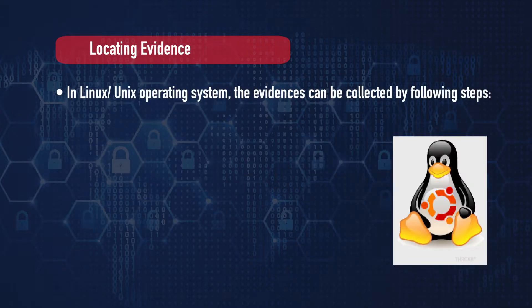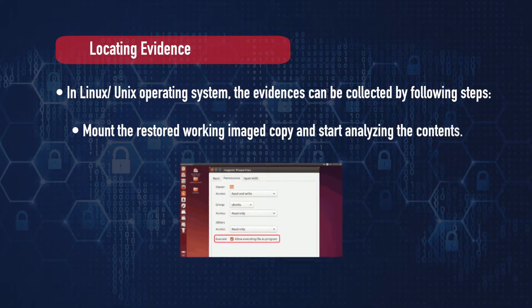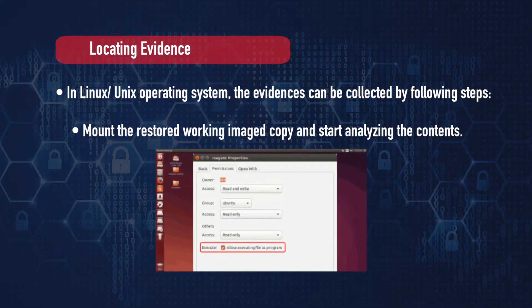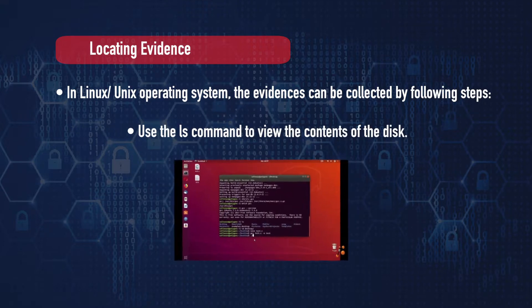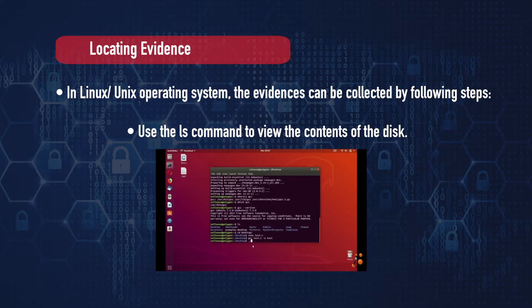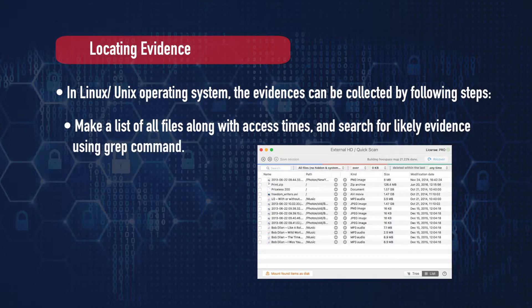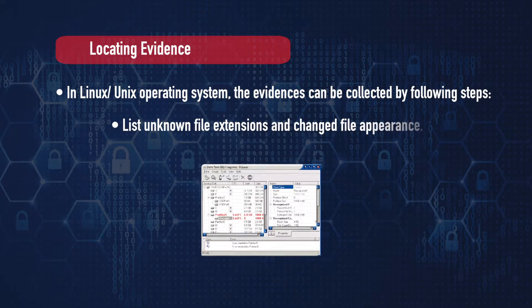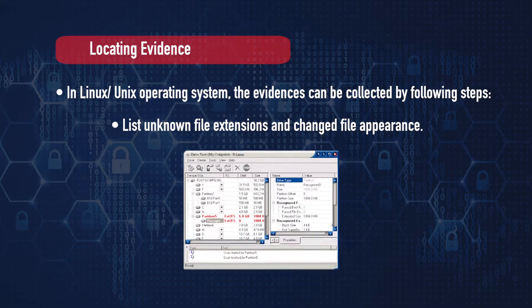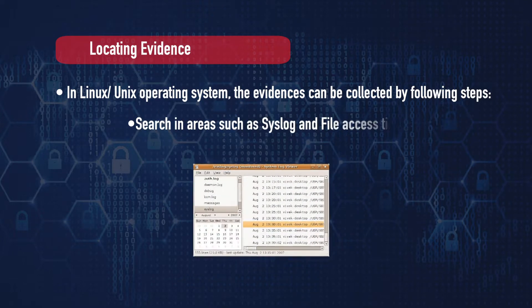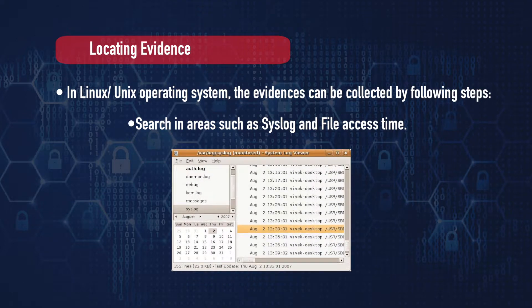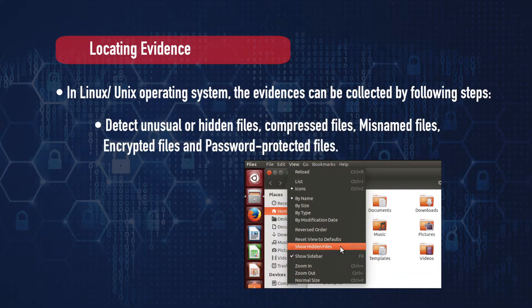In a Unix or Linux operating system, evidence can be collected by the following steps: mount the restored working imaged copy and start analyzing the content; use the ls command to view the contents of the disk; make a list of all files along with access time; search for likely evidence using the grep command; list unknown file extensions and change file appearance; search in areas such as syslog and file access time; detect unusual or hidden files, compressed files, misnamed files, encrypted files, and password-protected files especially.